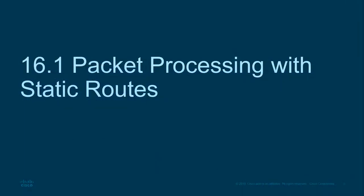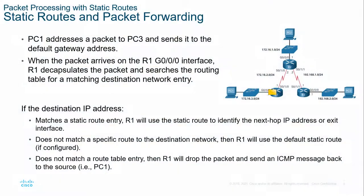Jumping right in — 16.1 packet processing with static routes. We've already looked at what static routes are and how they function. The process is: if an IP address comes in and matches the static route, the router will use that static route to identify the next hop IP or the exit interface. If it doesn't match, the router uses the default static route. If it still doesn't match, it drops the packet. So it tries to match a known route first, then uses a static route, then drops it if all else fails.